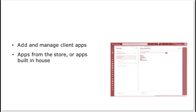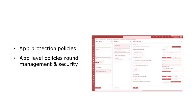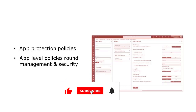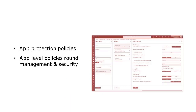Intune also allows you to add and manage client applications. Those client applications can either be from the App Store or Google Play Store, or built in-house by simply uploading the packaged app file. You can then add app protection policies to those apps. Those policies allow you to add requirements at the app level instead of the device level, for example blocking a user from copy/pasting information from an app, requiring a PIN to open certain apps, or encrypting the information from that application.